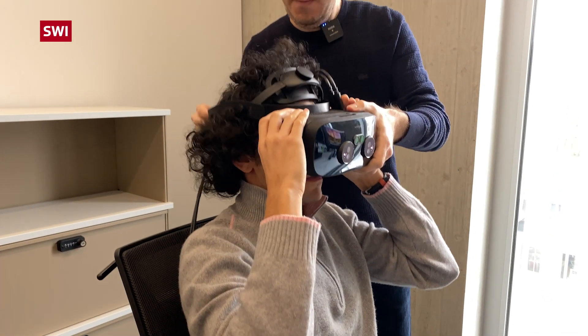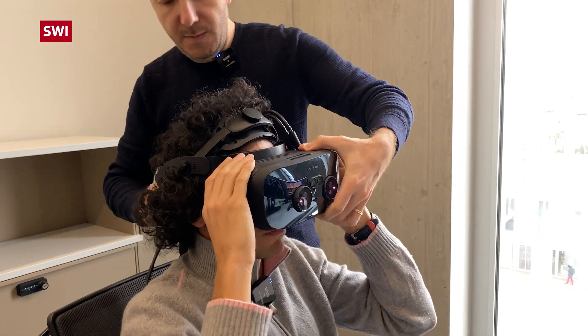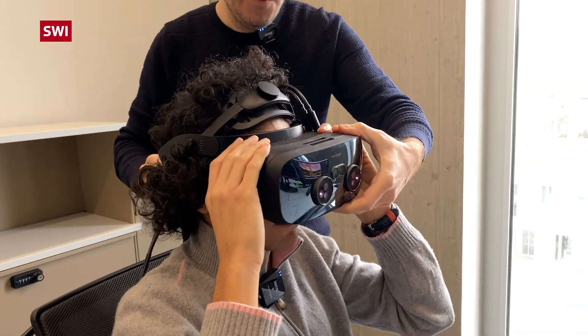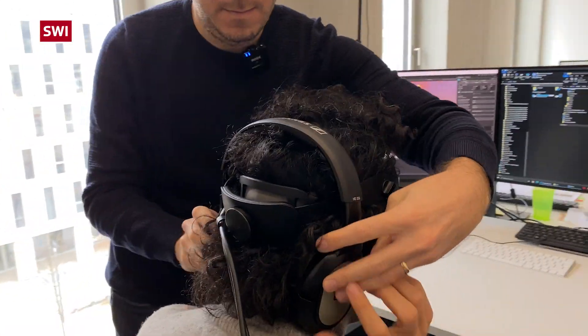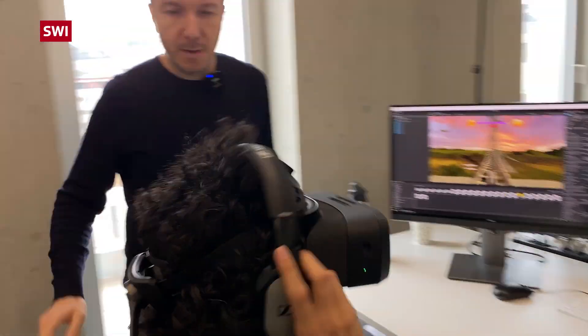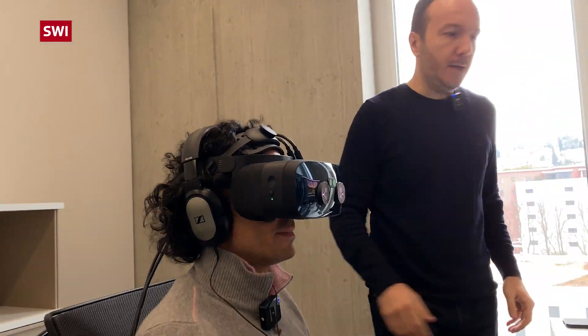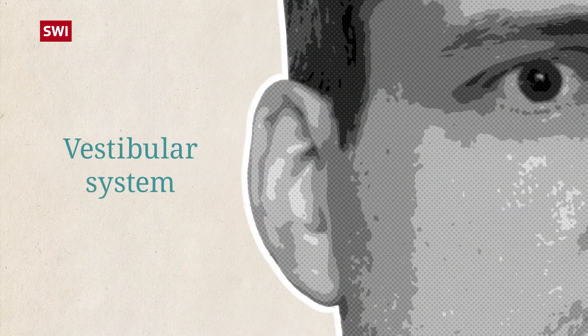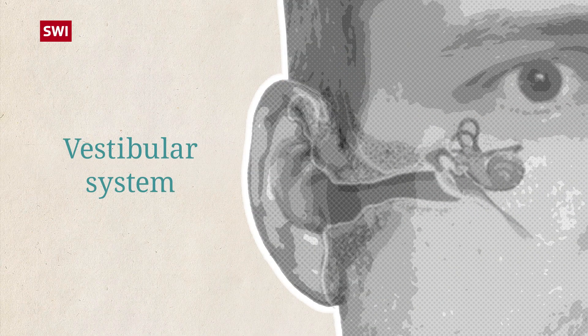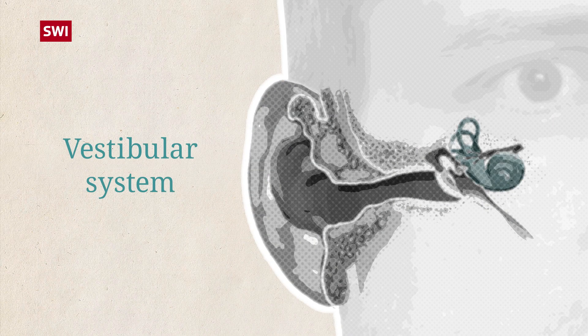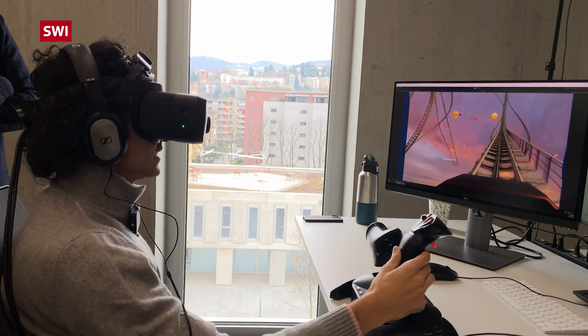Another problem is the conflict between visual and so-called vestibular cues. The vestibular system in our inner ear is responsible for the sense of balance and spatial orientation.